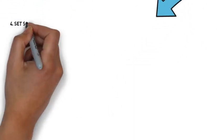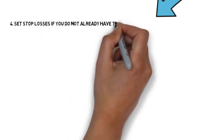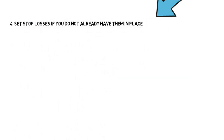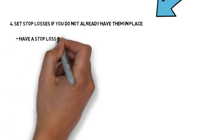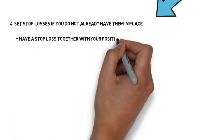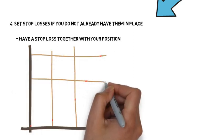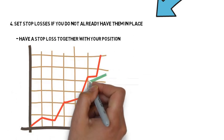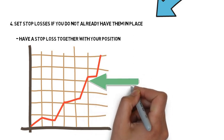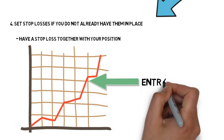Tip number four is you want to set stop losses if you do not already have them in place. I always share that every time you enter a position in the stock market, you want to have a stop loss together with your position. The stop loss is so important because it establishes a price level for us to exit that we determine the moment we enter a position in the market.